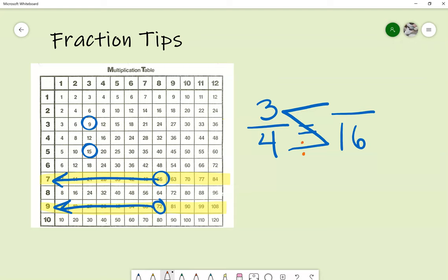So 4, 16 divided by 4, 4 goes into 16 four times.